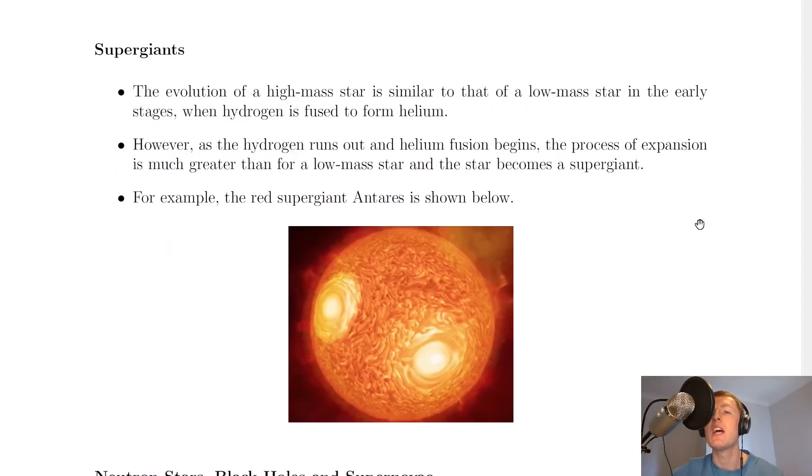What we've just discussed is what happens to low mass stars, i.e. stars that are similar to the mass of the sun. But what happens if our stars are high mass stars, much greater than the mass of the sun? Well, we're going to start looking at supergiants here.